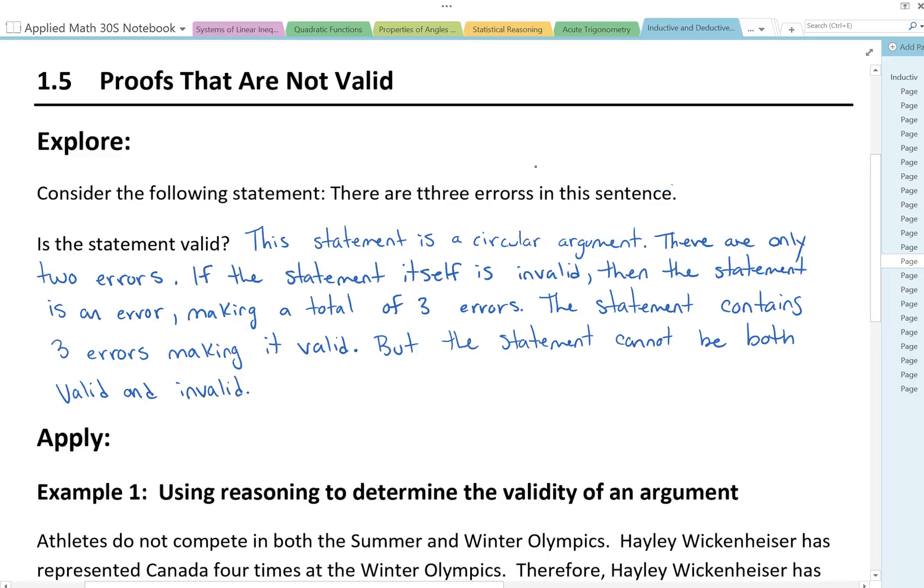So that means the statement is valid. This statement is a circular argument. There are only two errors. If the statement itself is invalid, then the statement is an error, making a total of three errors. But if the statement contains three errors, making it valid, then the statement cannot be both valid and invalid.